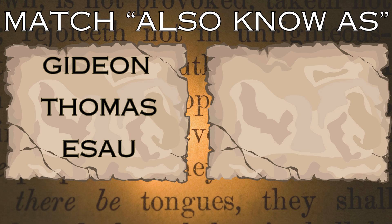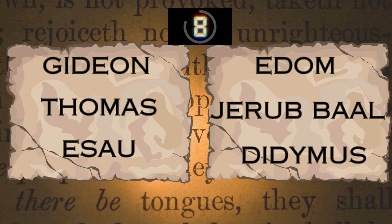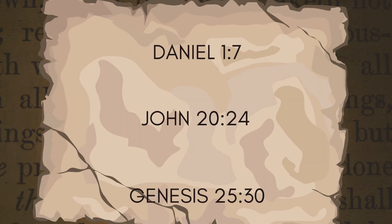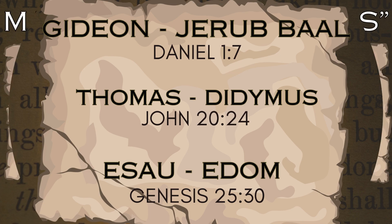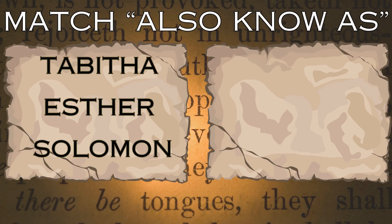Match the 'also known as' names for Gideon, Thomas, and Esau. The people of Gideon's town called him Jerubbaal because of what he did. The disciple Thomas was also known as Didymus, and Jacob's brother Esau was also known as Edom.